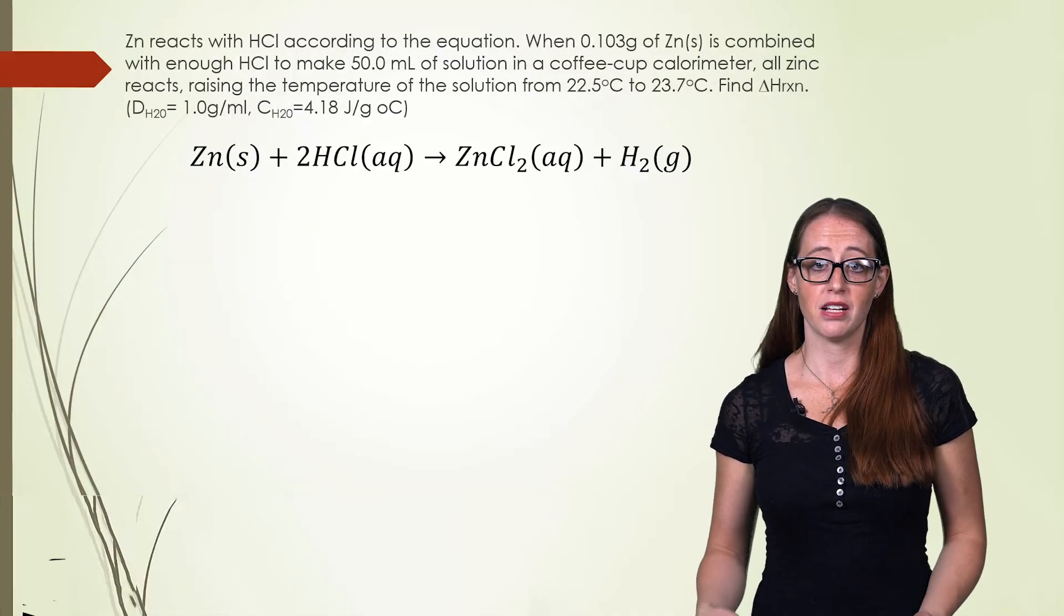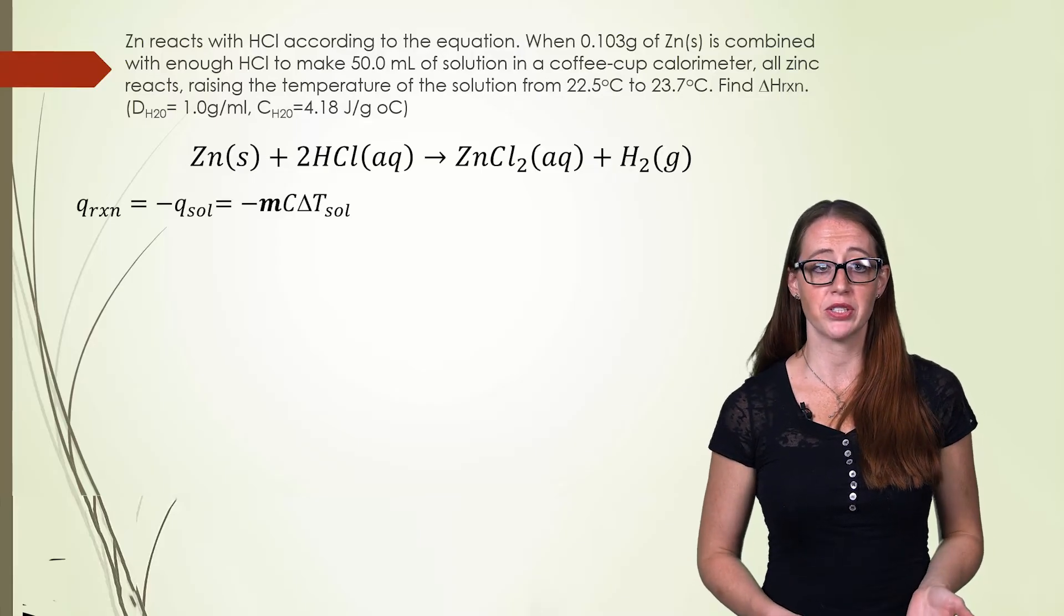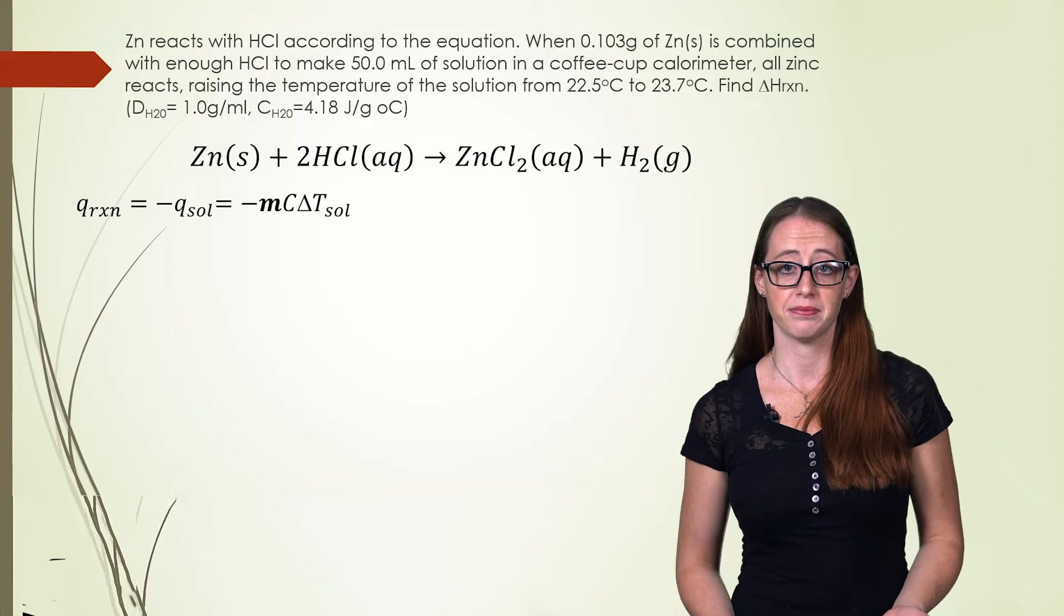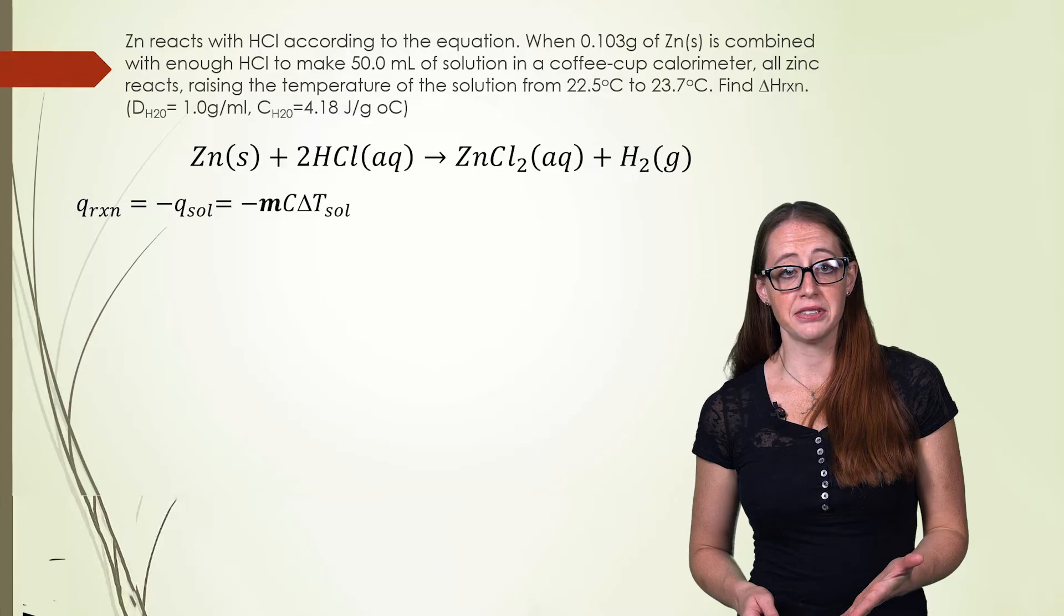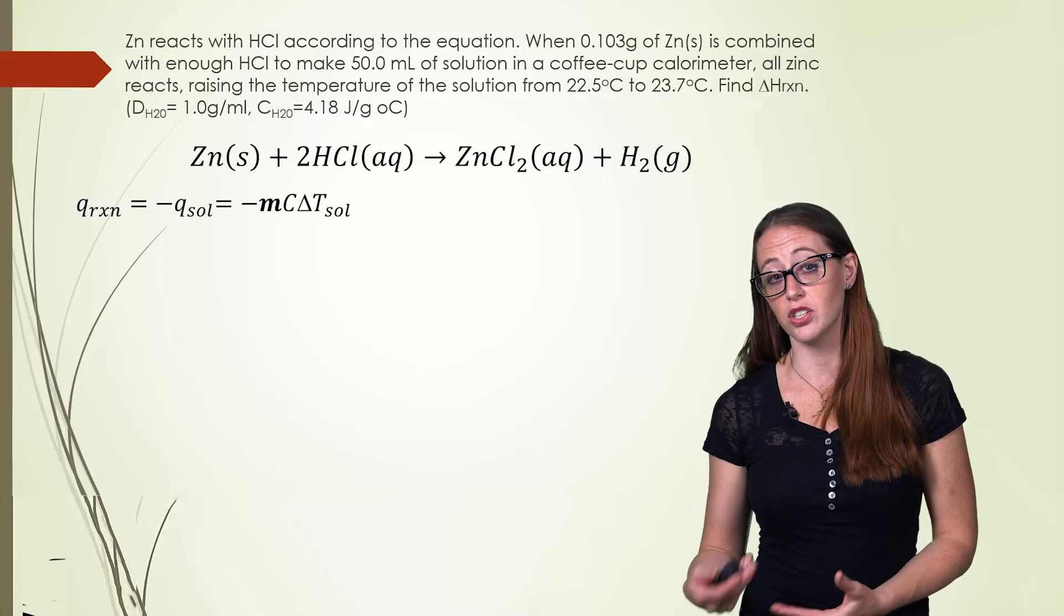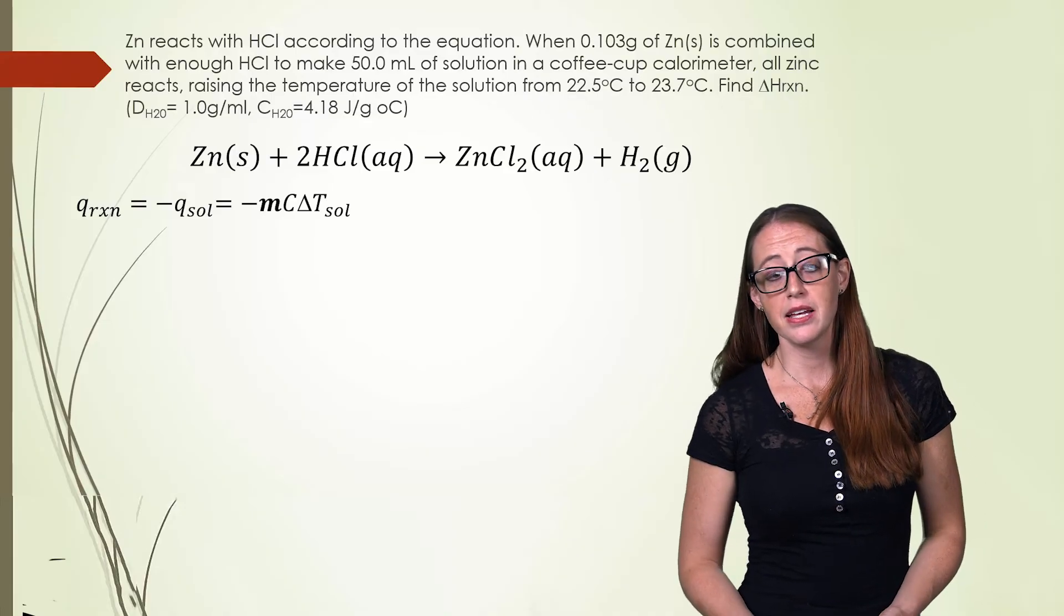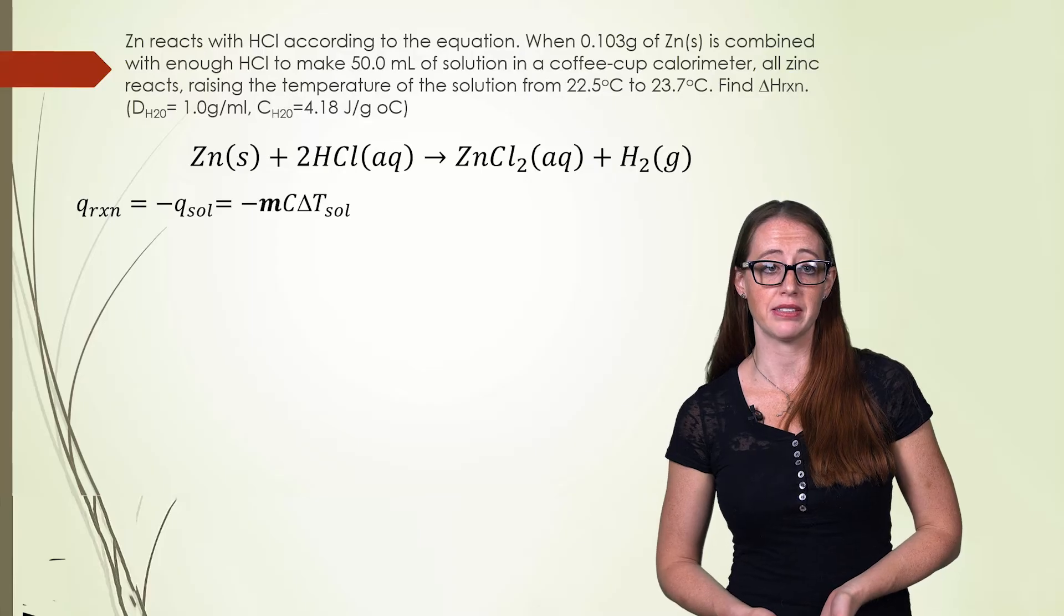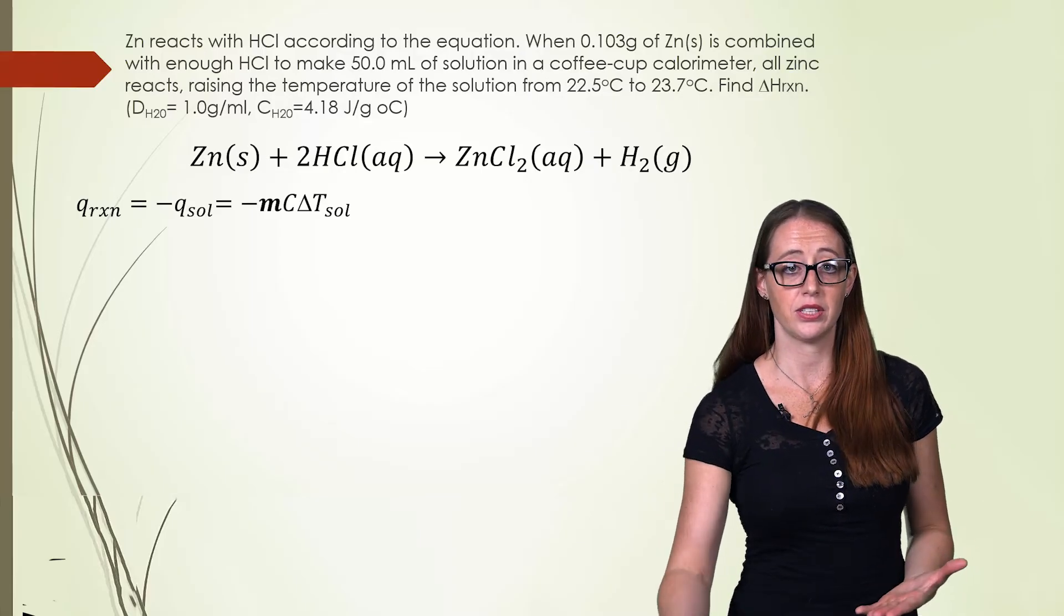We need to start by solving for the Q. So here, our Q of our reaction is going to equal the opposite sign of whatever our Q of solution is. So here I put the MC delta T, and because I'm doing the delta T of the solution, I would be calculating the Q of the solution. Since I actually care about the Q of the reaction, I put a negative sign out front. And that's just to make sure that we get the Q of the reaction, rather than the Q of the solution.